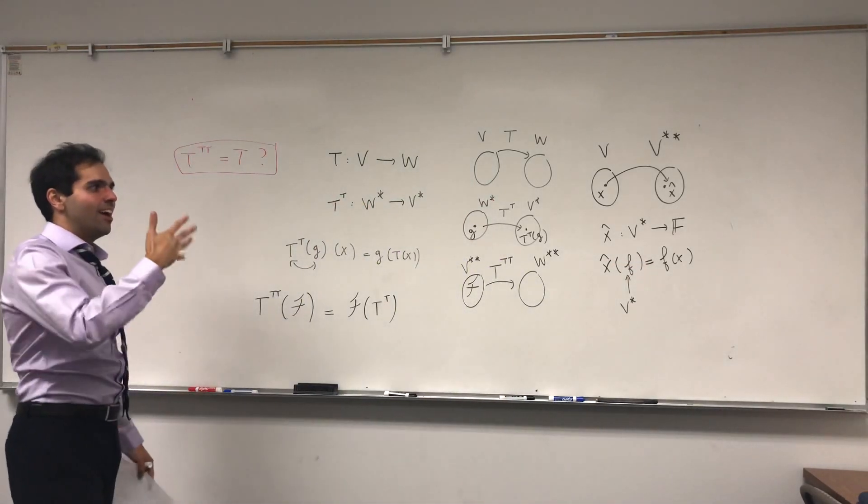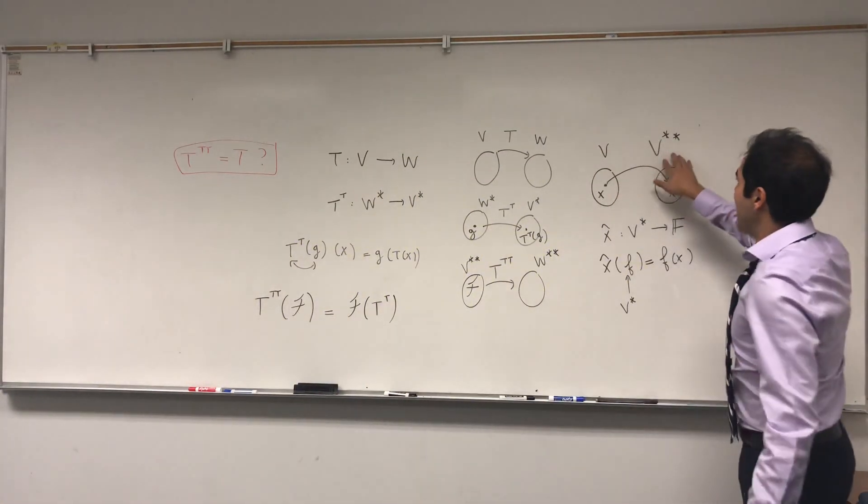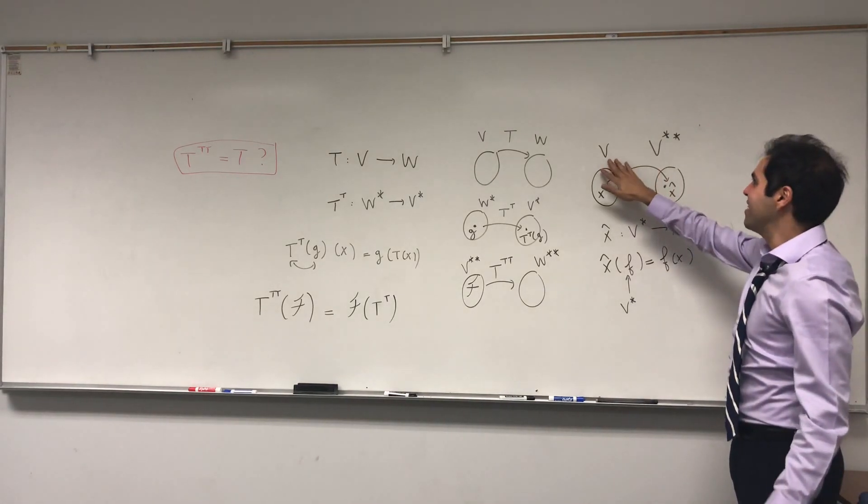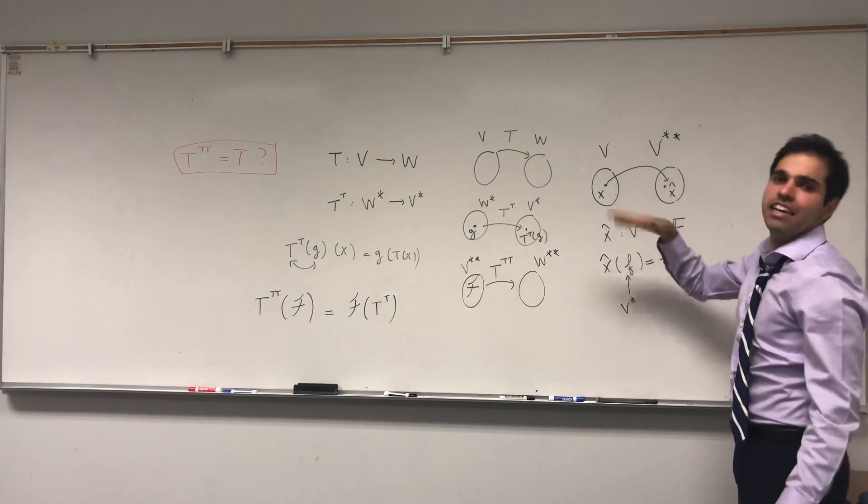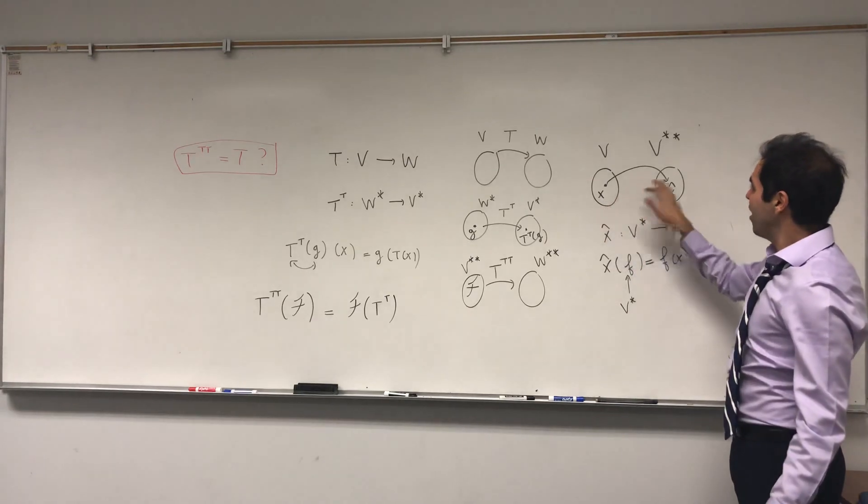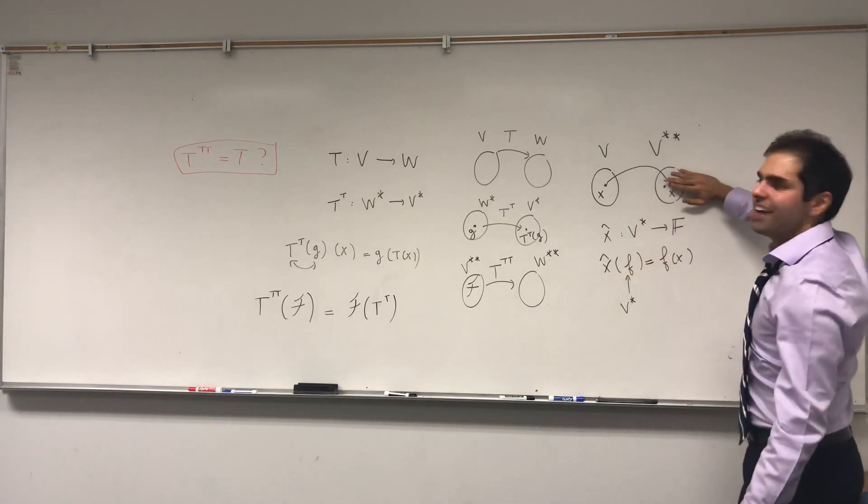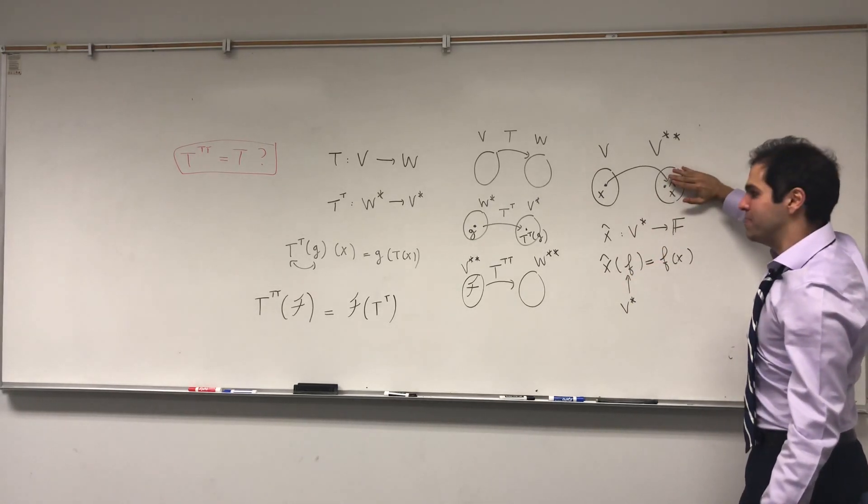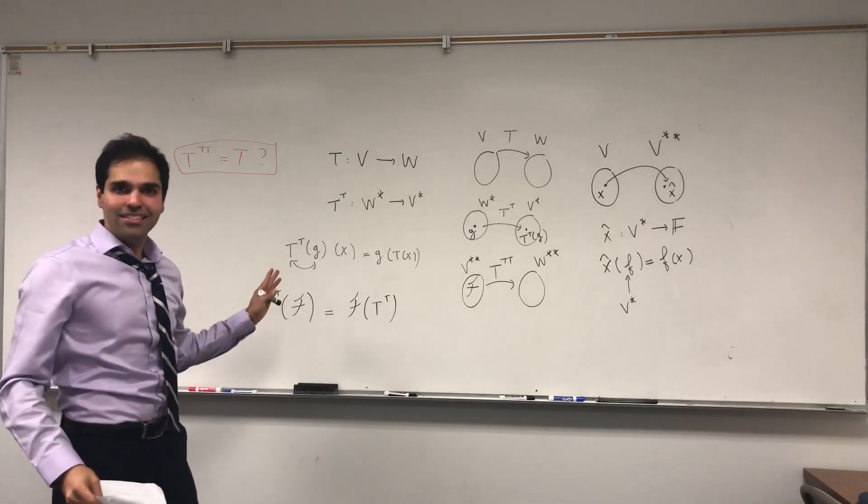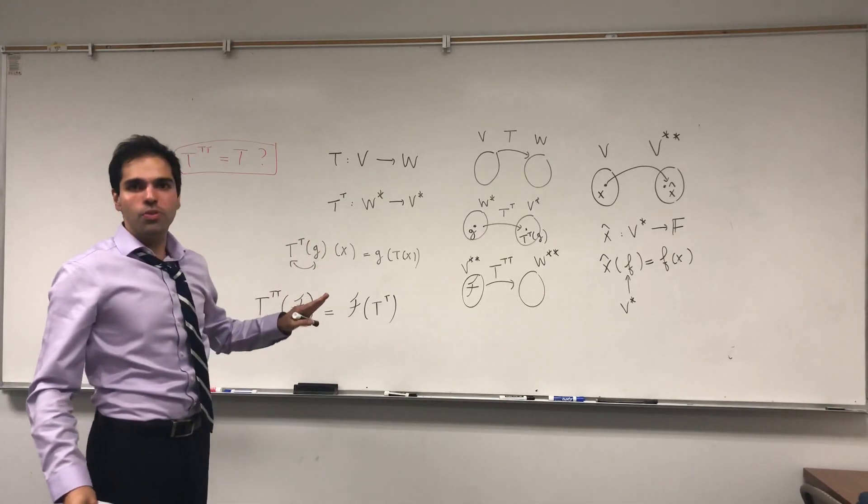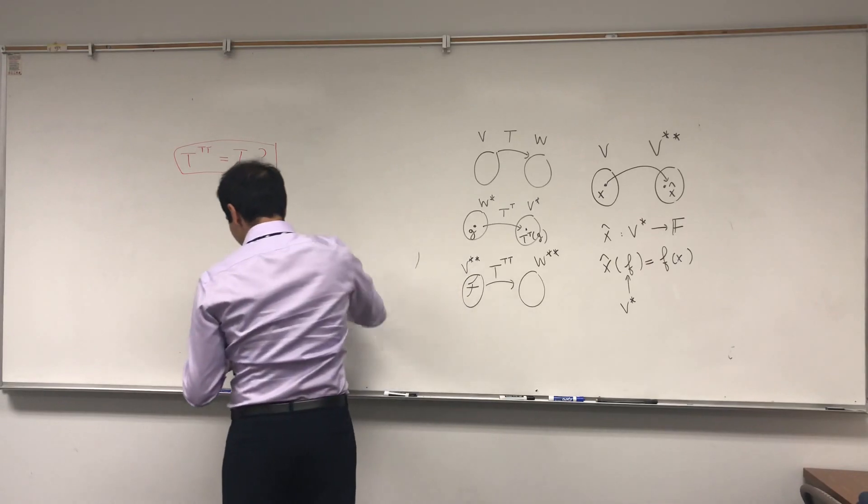That's what's called the evaluation functional. It literally takes a function as an input and evaluates it as its vector. I've done another video on this. And what's nice is if everything's finite dimensional, then this association, the hat thing, is actually an isomorphism. So even though V and V double star are not the same, by removing the hats, you can actually think of them as being the same. And this is the goal of today. I want to show that if you ignore the hats, then in fact T transpose transpose becomes T.